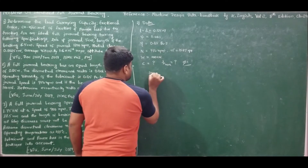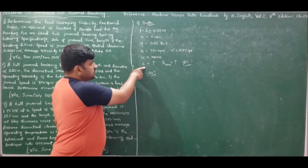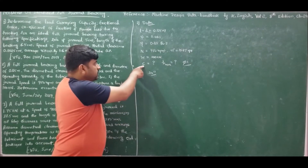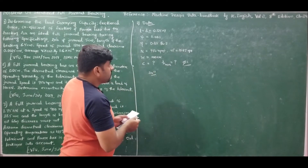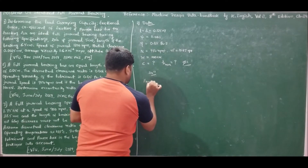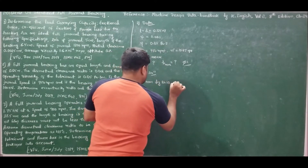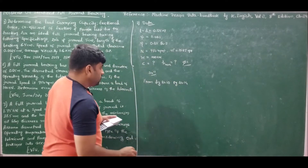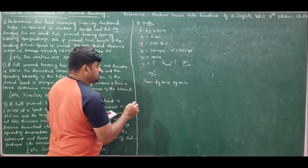Since attitude (eccentricity ratio) is asked, we directly use the graph from figure 24.10, page 24.14 of the data handbook — a graph of Sommerfeld number S versus eccentricity ratio epsilon. We calculate S = (eta × n_dash / P) × (1 / Xi²).